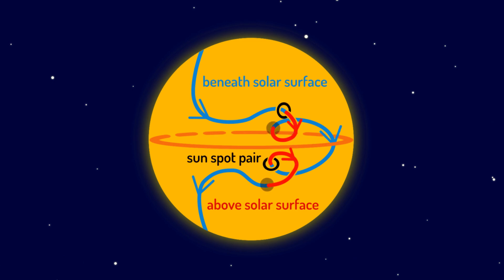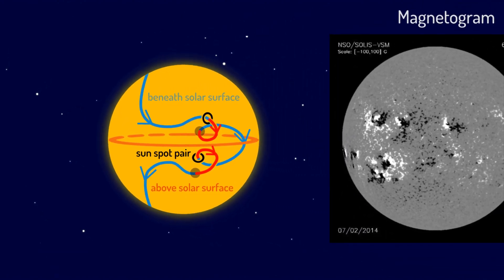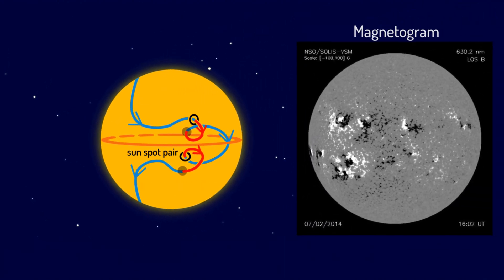This explains why the sunspots on the photosphere often show up in pairs with opposite magnetic polarity. This also explains why sunspots tend to emerge in both the northern and southern hemispheres.